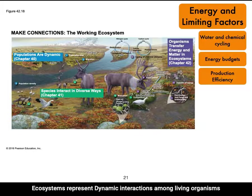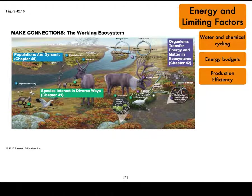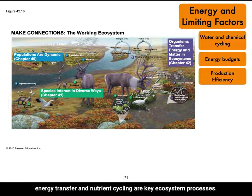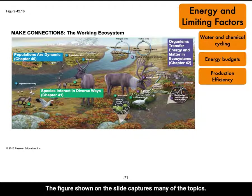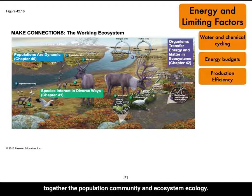Ecosystems represent dynamic interactions among living organisms and between biotic and abiotic components of the environment. Energy transfer and nutrient cycling are key ecosystem processes. The figure shown on the slide captures many of the topics covered in our ecology unit, using an Arctic tundra system during the summer to put together the population, community, and ecosystem ecology introduced over the past two lectures.